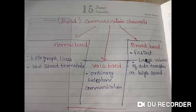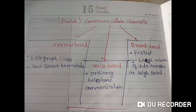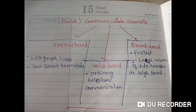Communication channels are classified into three types: narrow band, voice band, and broad band. Another way, we have four classifications: narrow band, voice band, and broadband.